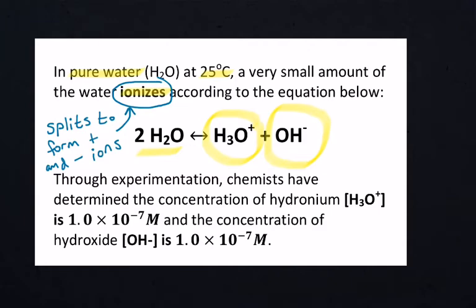Through experimentation, chemists have determined that the concentration of hydronium is 1 times 10 to the negative 7 molar, and the concentration of hydroxide is also 1 times 10 to the negative 7 molar. It's a very small number. Most of the water in a beaker or glass is going to be H2O, and a very small amount (1 times 10 to the negative 7) is going to be hydroxide and hydronium.